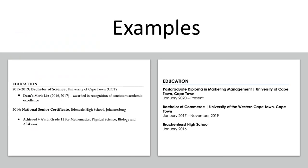You don't have to list all the courses that you have done. Keeping the reverse chronological order, state other qualifications you received up to high school. There is no need to list your school subjects. It is not necessary to include information about your primary school.